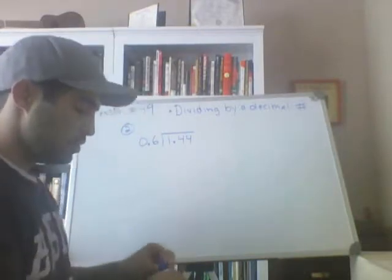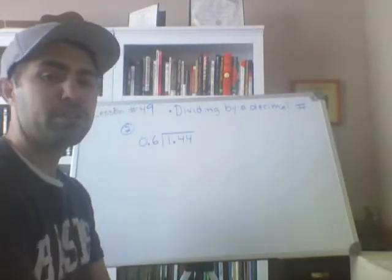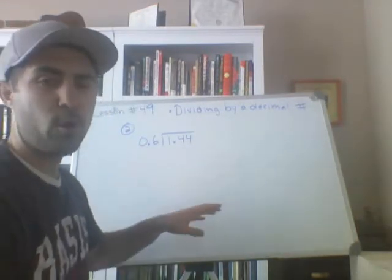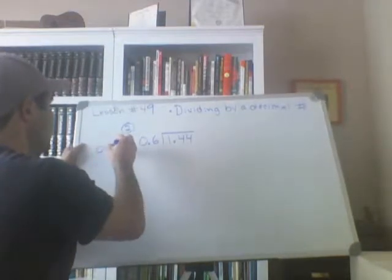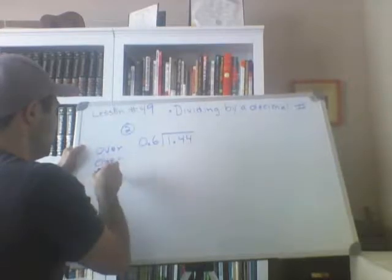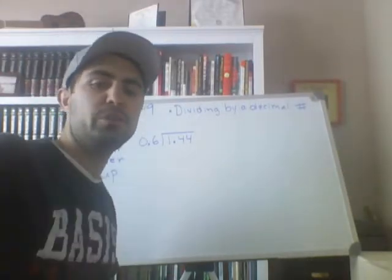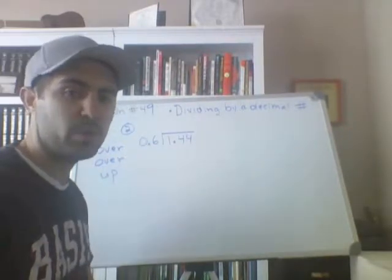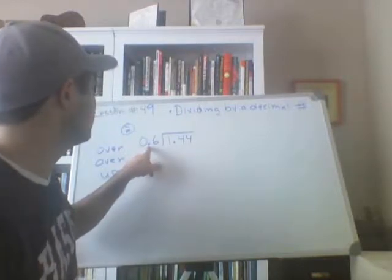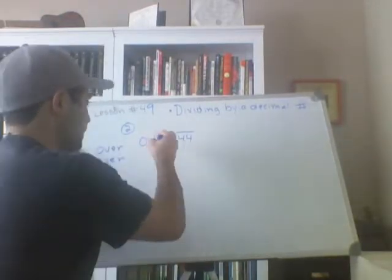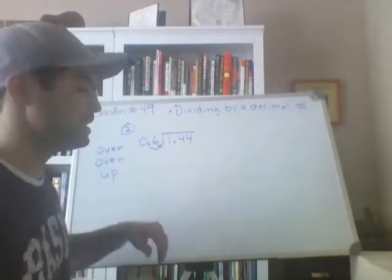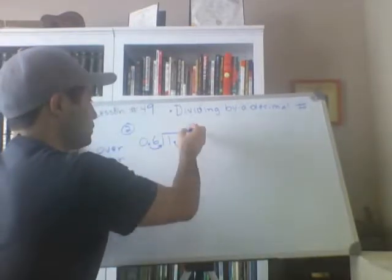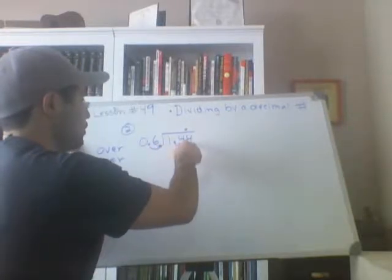Now that you know the background to enlarging these fractions, or decimal division problems, by multiplying by 10, I want to talk about the over, over, up method. So we'll write down: over, over, up. Instead of dividing by a decimal, I want to divide by a whole number. So I'm going to take this one and move it over one place — basically multiplying it by 10. I'm going to take this decimal and move it over one place, multiplying it by 10 as well. Then I'm going to move the decimal straight up. Over, over, up.